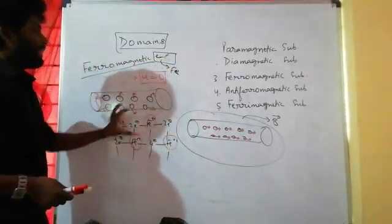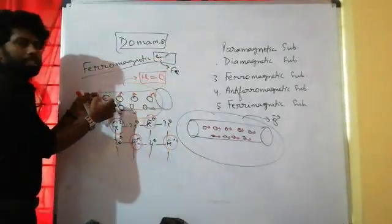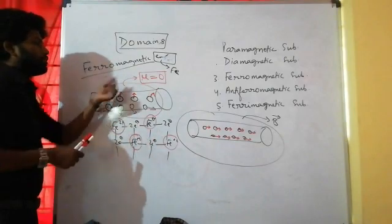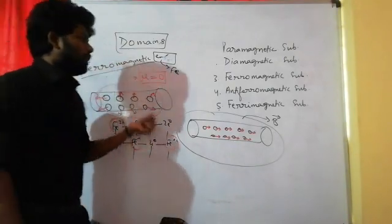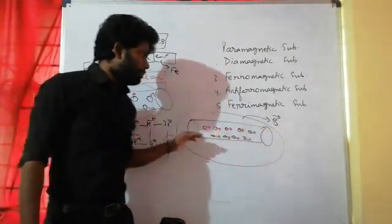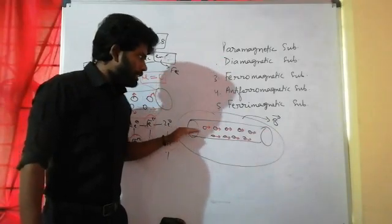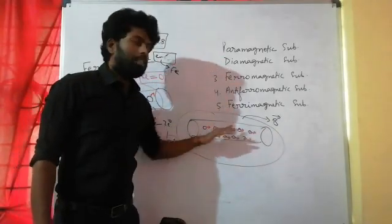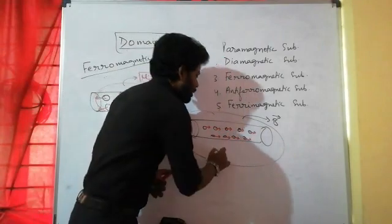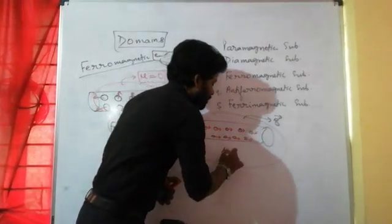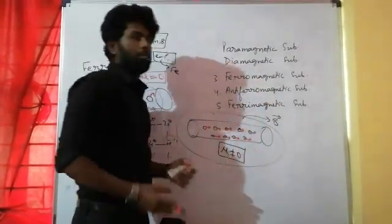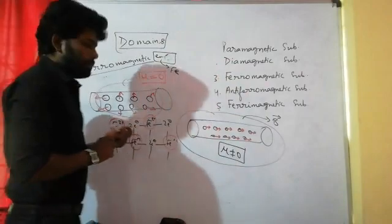So to summarize: in the absence of a magnetic field, all domains are oriented in random directions and the net magnetic moment is equal to zero. But in the presence of a magnetic field, domains are oriented in the same direction — in the direction of the field — and the net magnetic moment is not equal to zero.